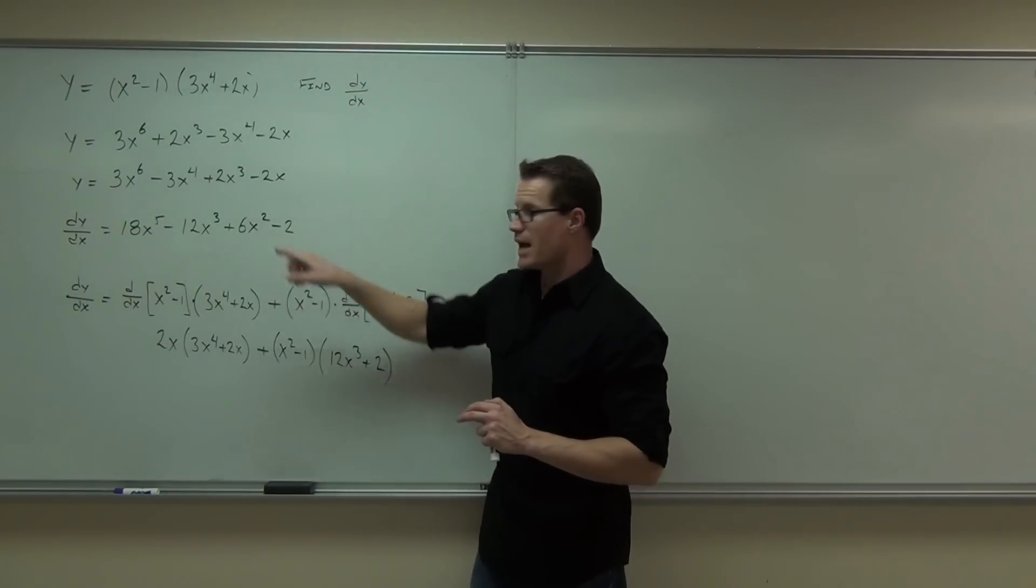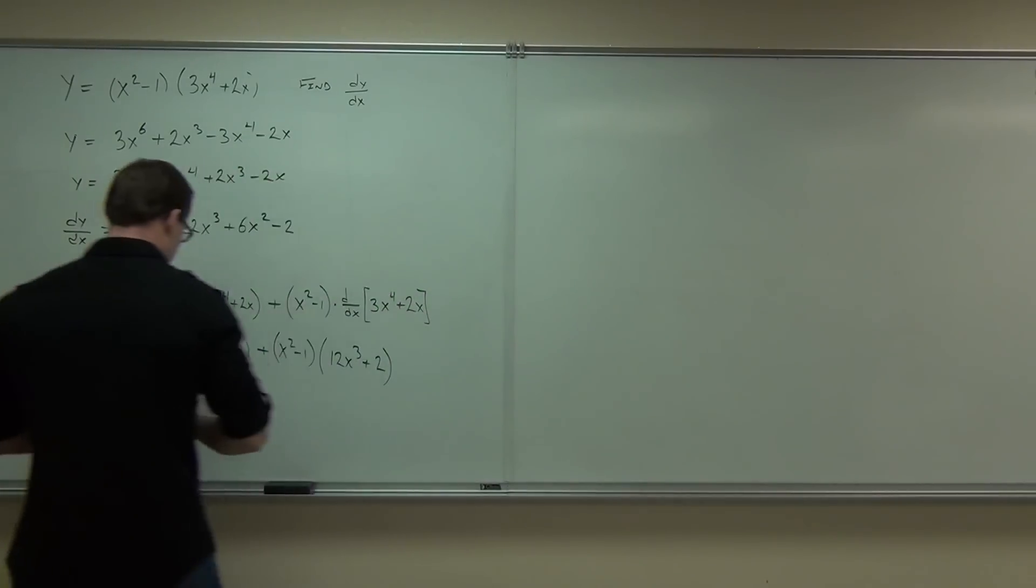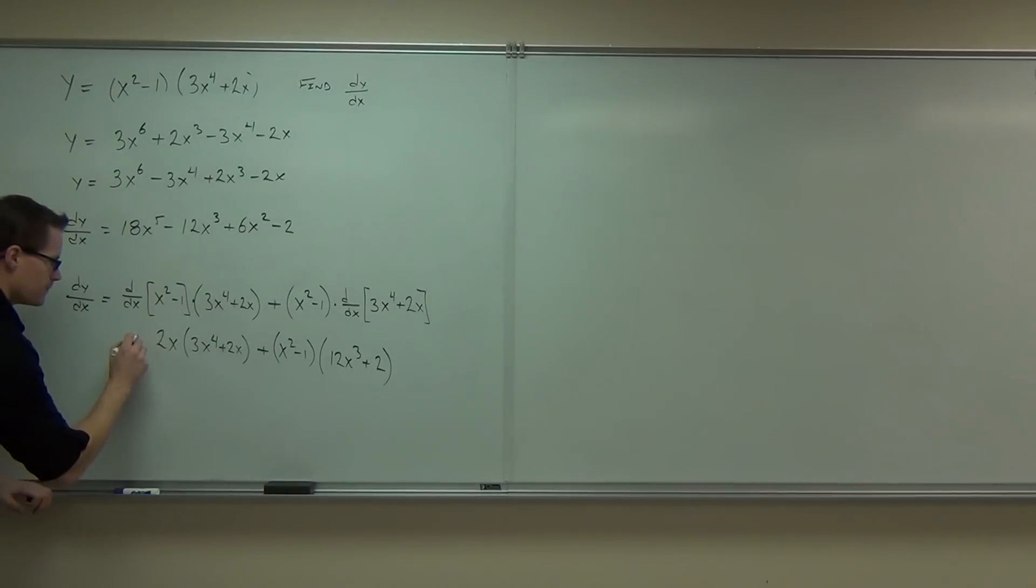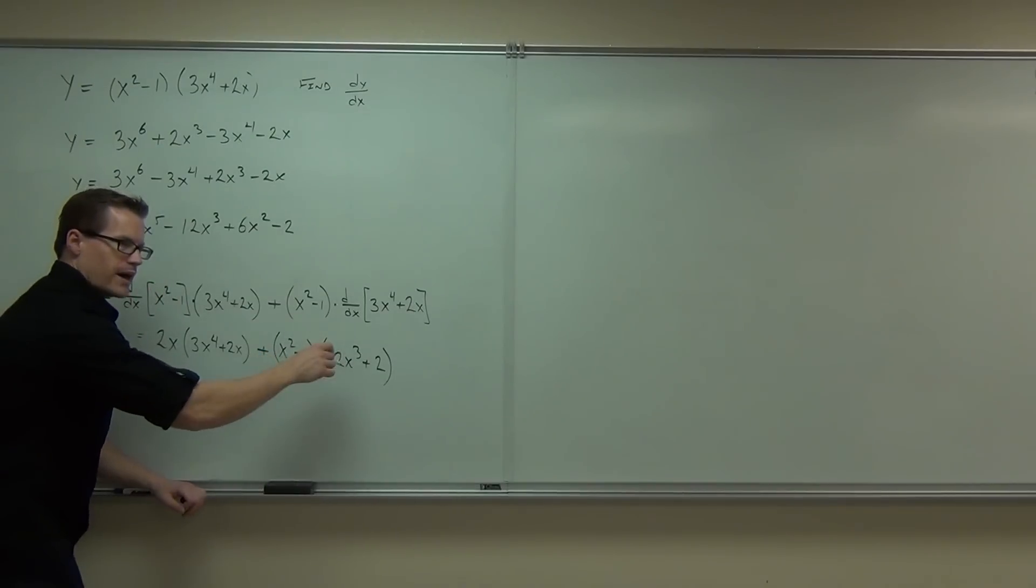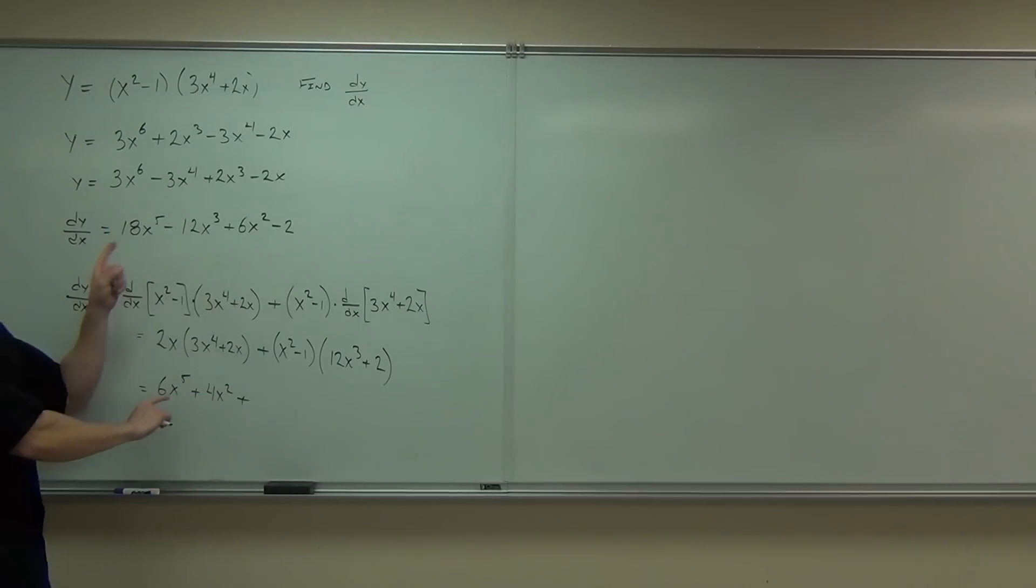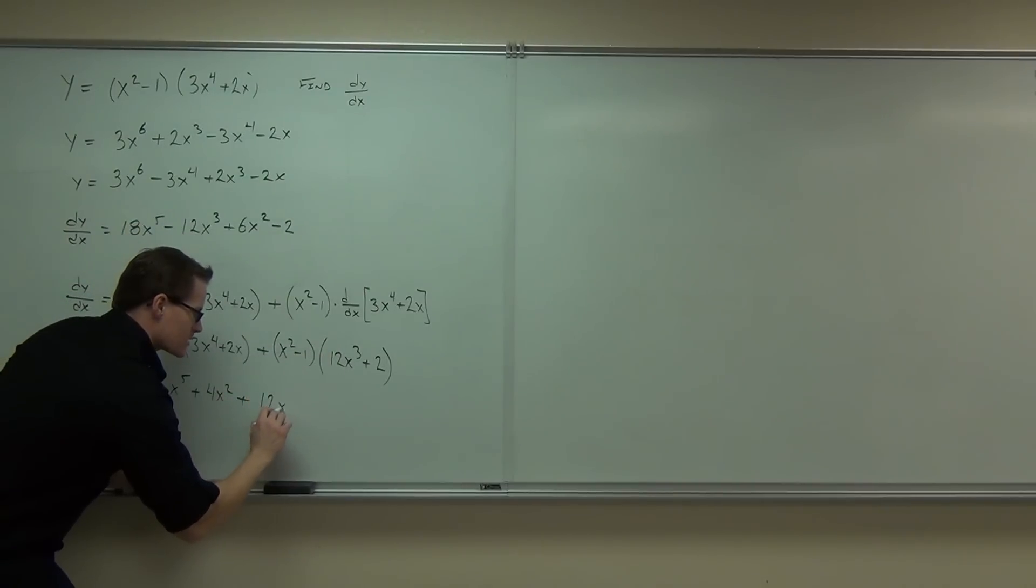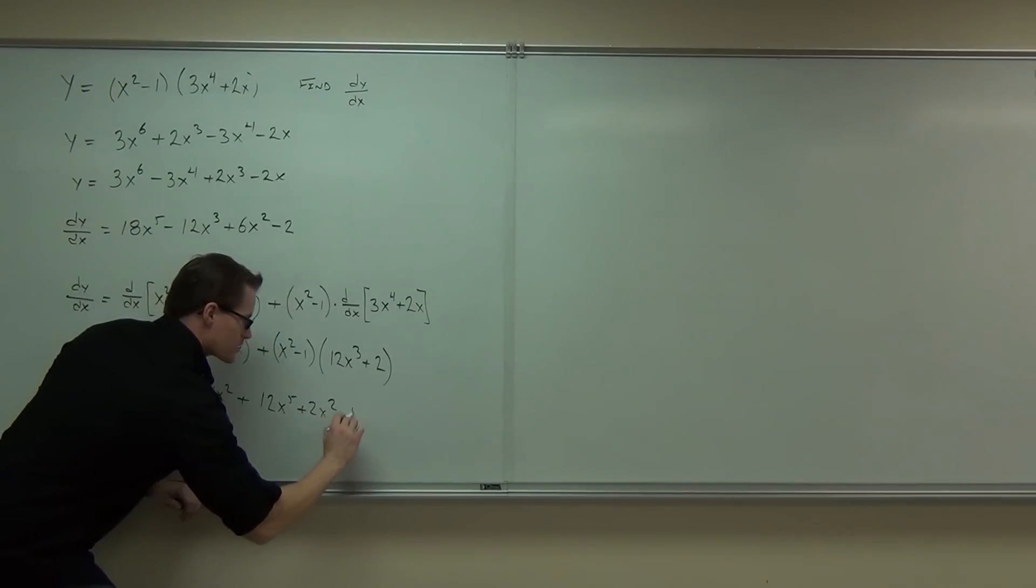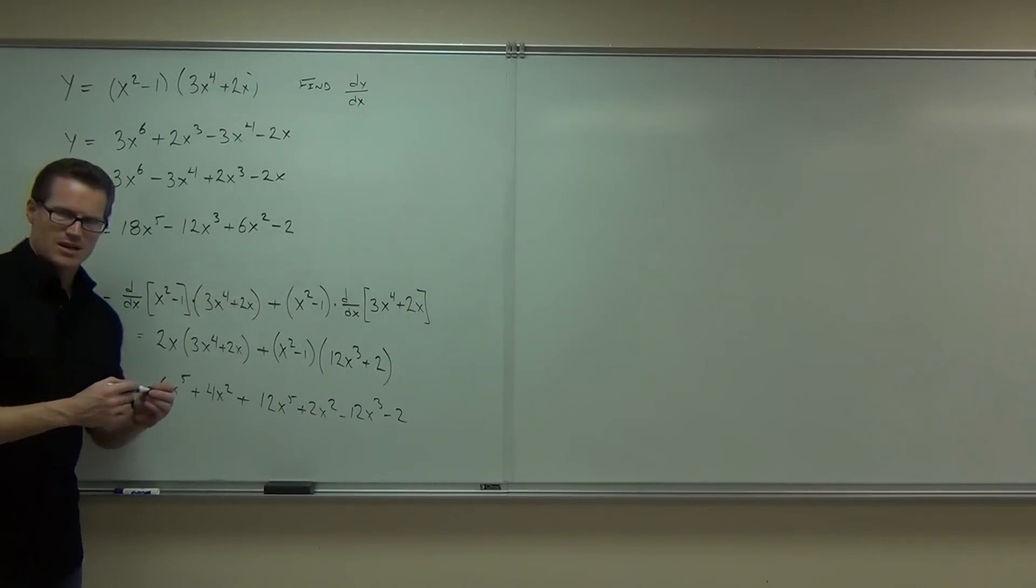Now is this the same as that? If we distribute it, it should be. Let's find out. Here we'll get our 6x⁵ plus 4x², plus we're going to have to foil that, right? Don't worry, we're not done. You're like wait a second, oh no. Just wait. If we foil this, distribute it, we're going to get 12x⁵ + 2x² - 12x³ - 2. Well at least I see the minus 2. You guys okay with the distribution? Some basic algebra here?